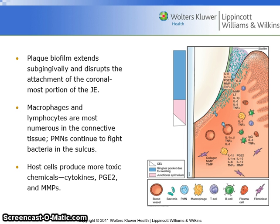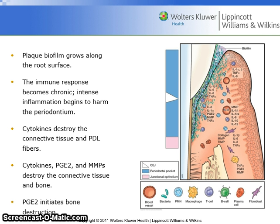Plaque biofilm then extends subgingivally and disrupts the attachment of the coronal-most portion of the junctional epithelium. Macrophages and lymphocytes are most numerous in the connective tissue. PMNs continue to fight bacteria in the sulcus. Host cells produce more toxic chemicals — cytokines, PGE2, and MMPs. The plaque biofilm grows along the root surface. The immune response becomes chronic. Intense inflammation begins to harm the periodontium. Cytokines destroy the connective tissue and PDL fibers. Cytokines, PGE2, and MMPs destroy the connective tissue and bone.